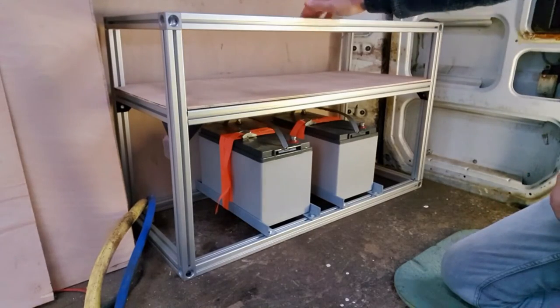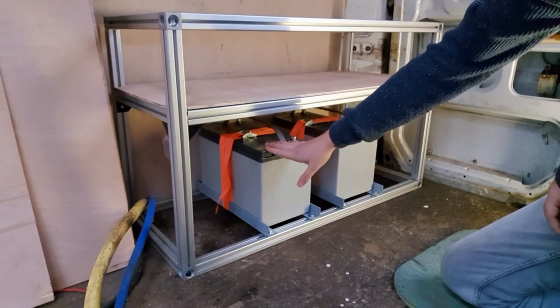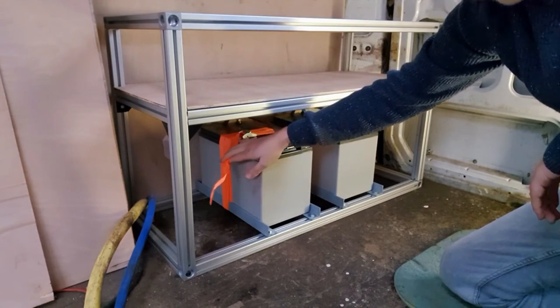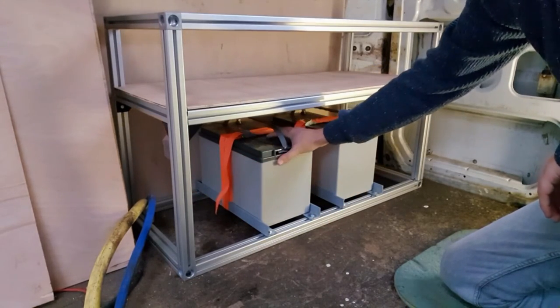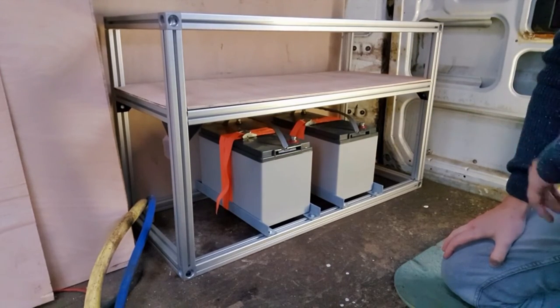And there we are. That's the frame in the van. We have our electronic shelf, our batteries sat on our mild steel angle which are lashed down with these ratchet straps here. So that's nice and secure now. It's not going anywhere. So I'm quite happy with that.